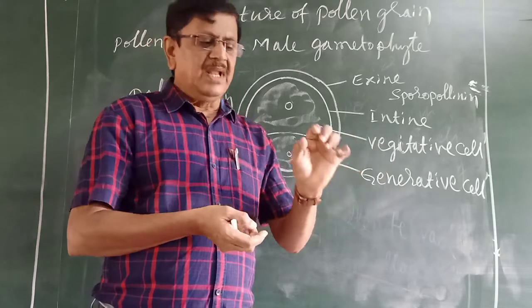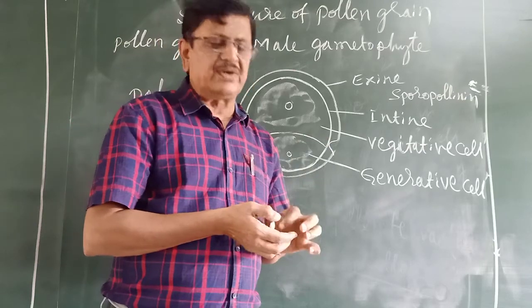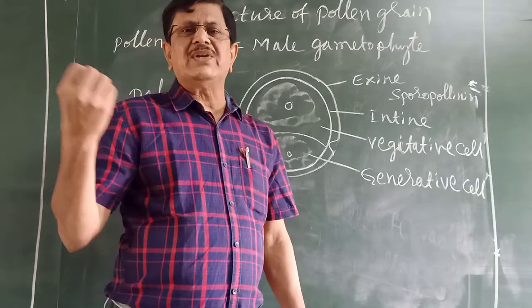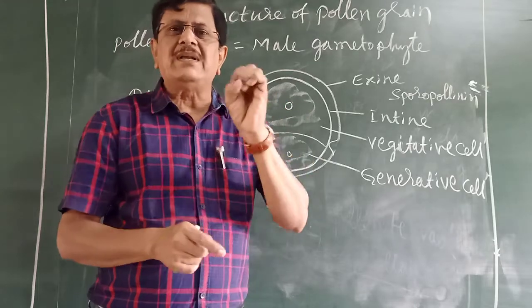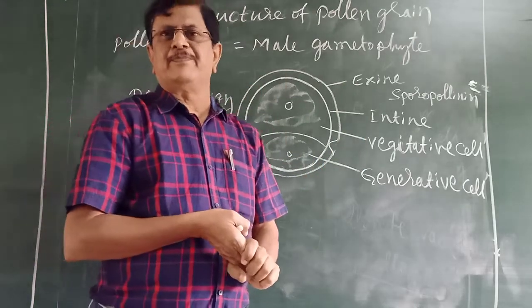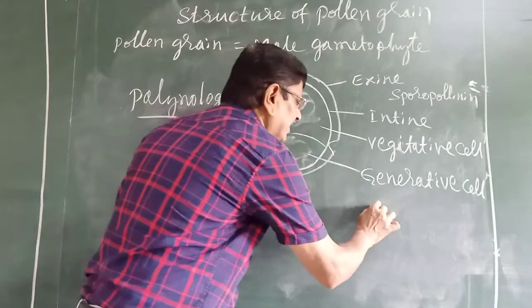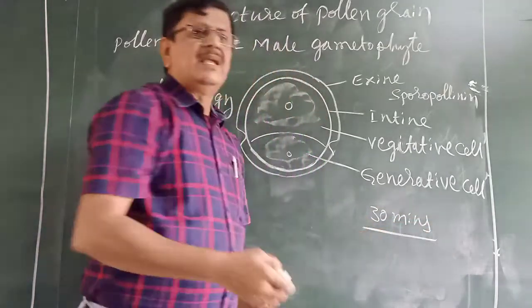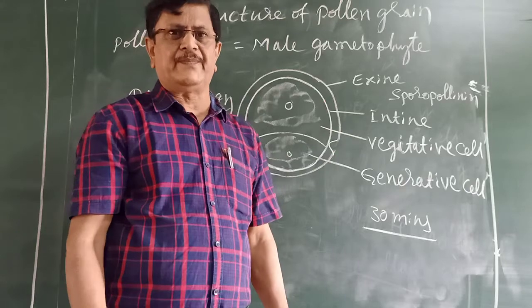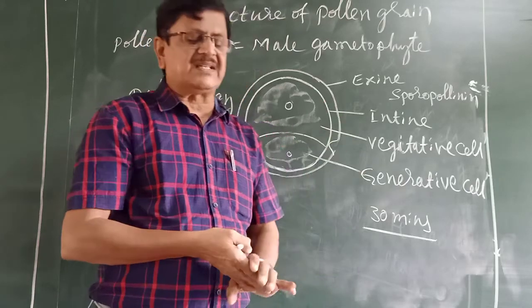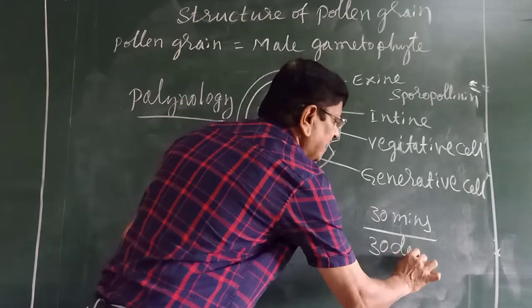The viability of pollen grain refers to how long it remains living. It is resistant to heat, temperature, alkali, and acid, but has limited life span or longevity. In the majority of monocot plants, it is viable for 30 minutes. In some dicot families like Rosaceae and Leguminosae, it can be viable for 30 days.